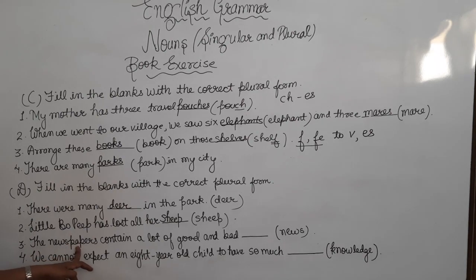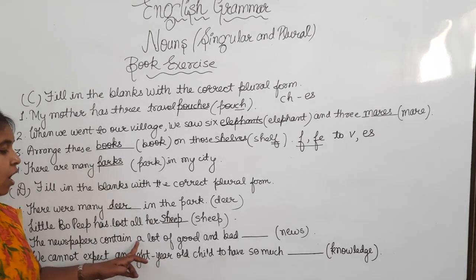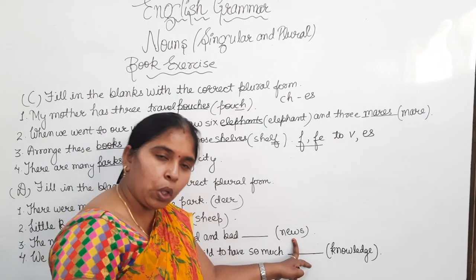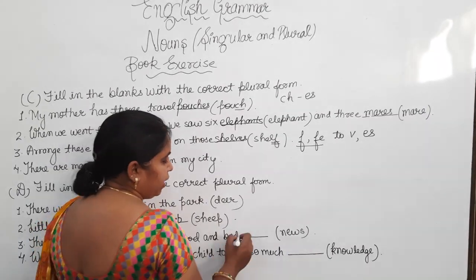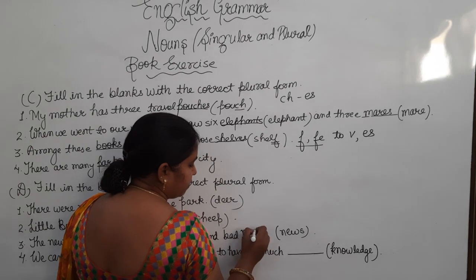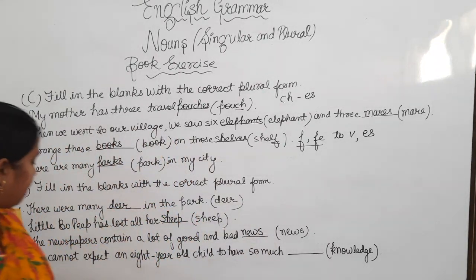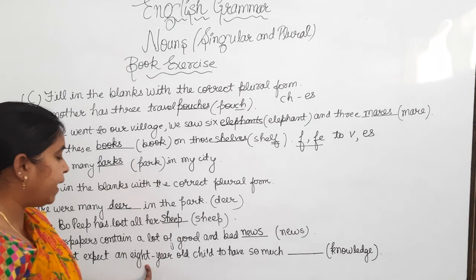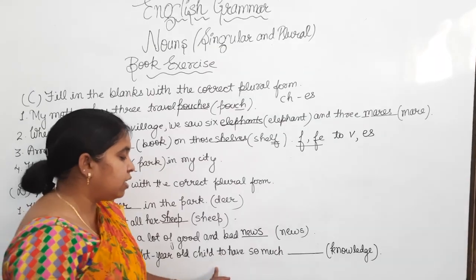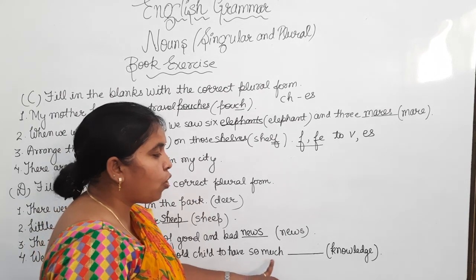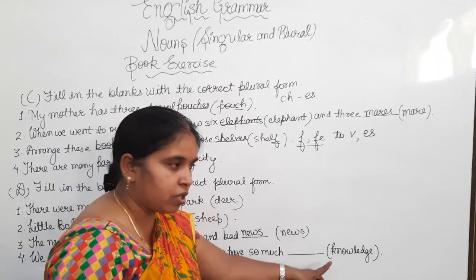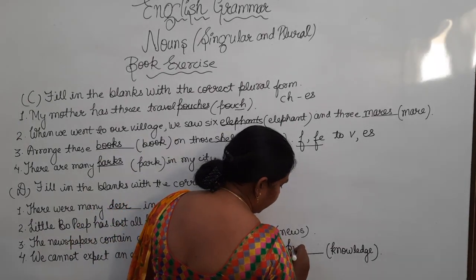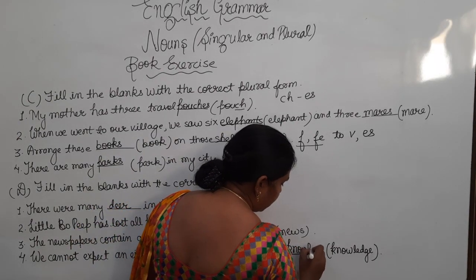The newspapers contain a lot of good and bad news. That will only come here. Next sentence. We cannot expect an 8-year-old child to have so much knowledge. That will remain same as we have learned. So here, the word knowledge will come.